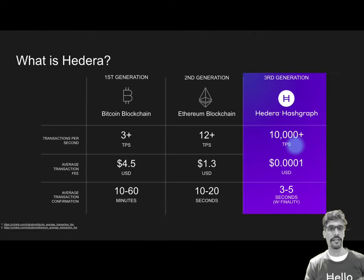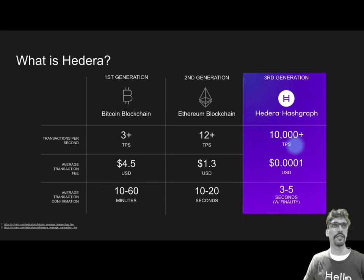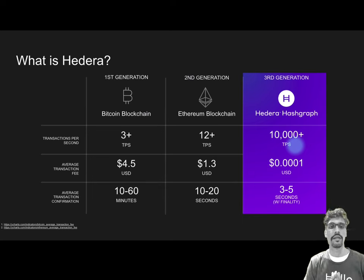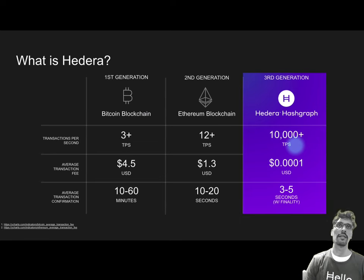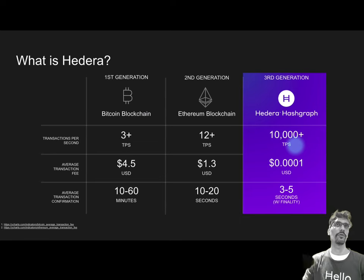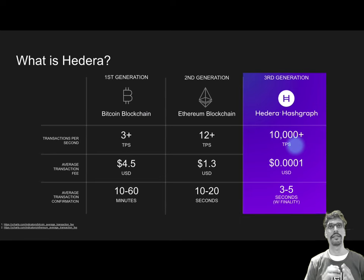Within DLTs there have been multiple iterations, and we think of Hedera as third generation. The first blockchain, Bitcoin, gives you pure transactions — sending cryptocurrency from one account to another. Ethereum innovated by allowing you to write programs that execute in a virtual machine — those are called smart contracts — and the execution is done by a virtual machine known as the EVM.